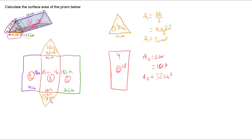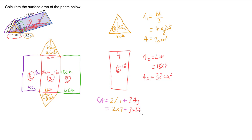So now I've got 2 triangles of area 7 and 3 identical rectangles. I want the total surface area, which is all of the faces added up. So my surface area is 2 lots of shape 1 plus 3 lots of shape 2 — that's 2 lots of 7 plus 3 lots of 32. So this triangular prism has a surface area of 110 square centimetres.